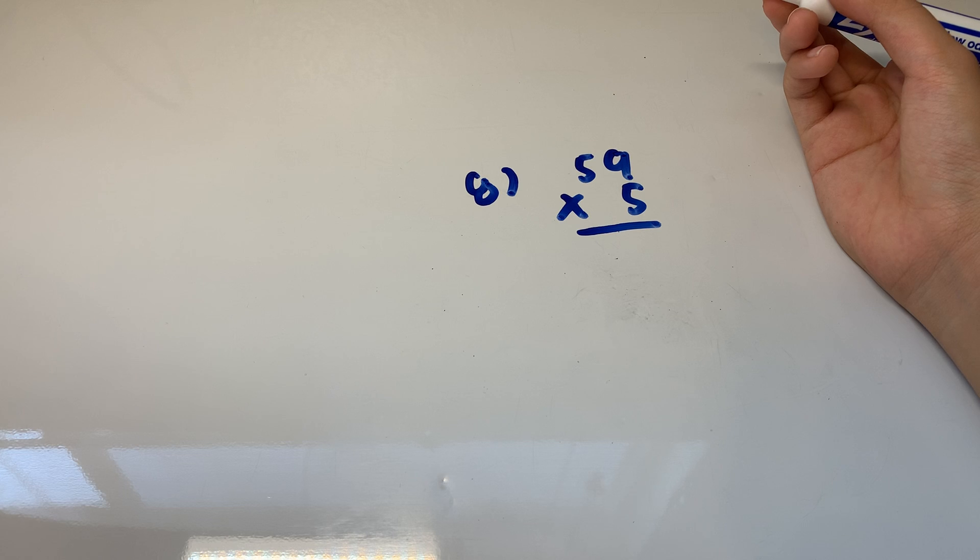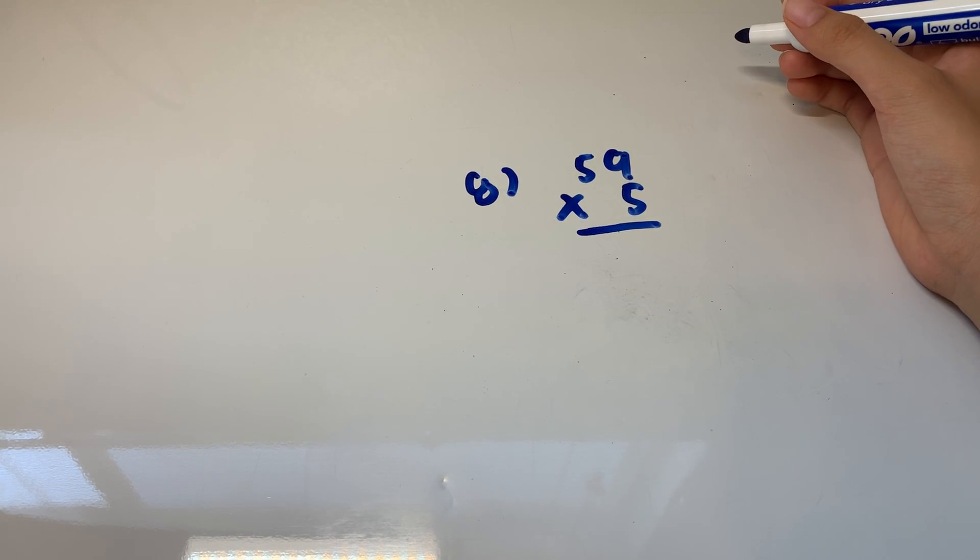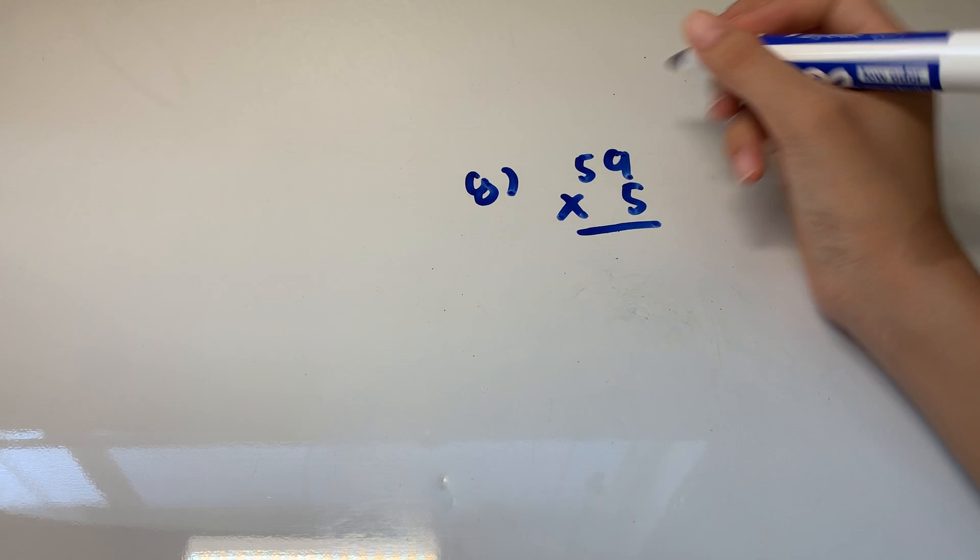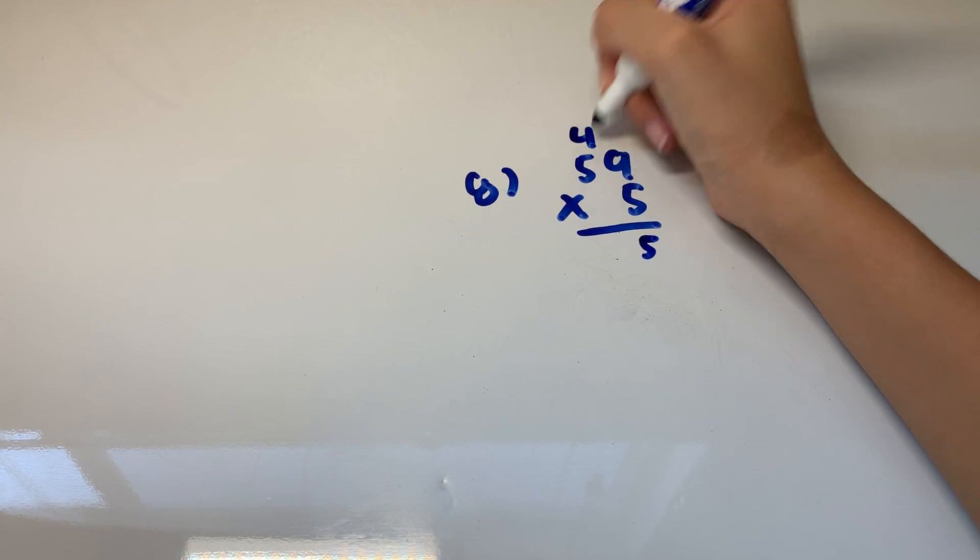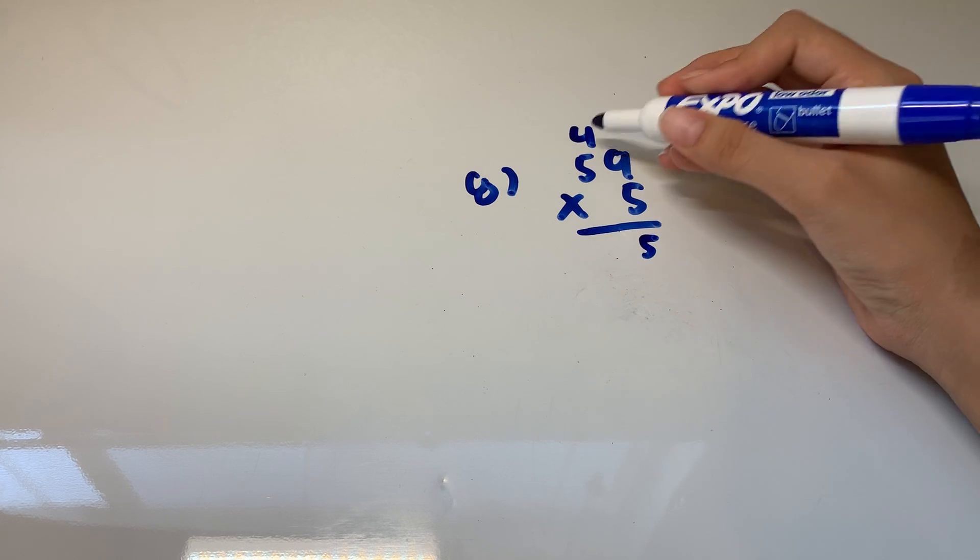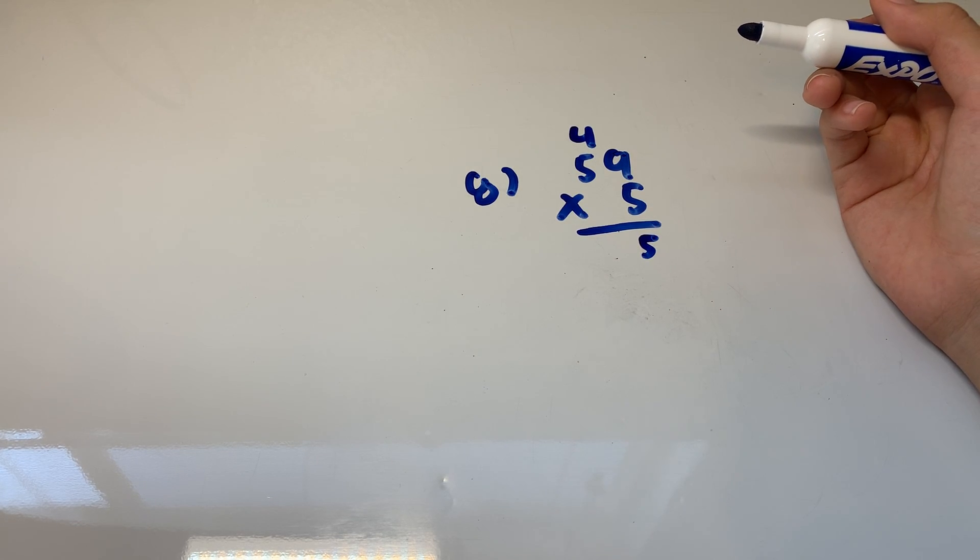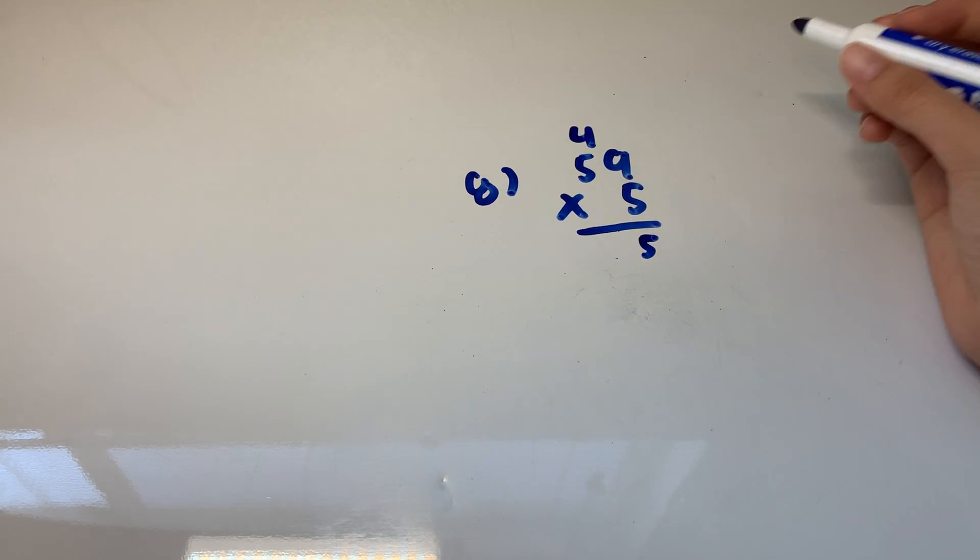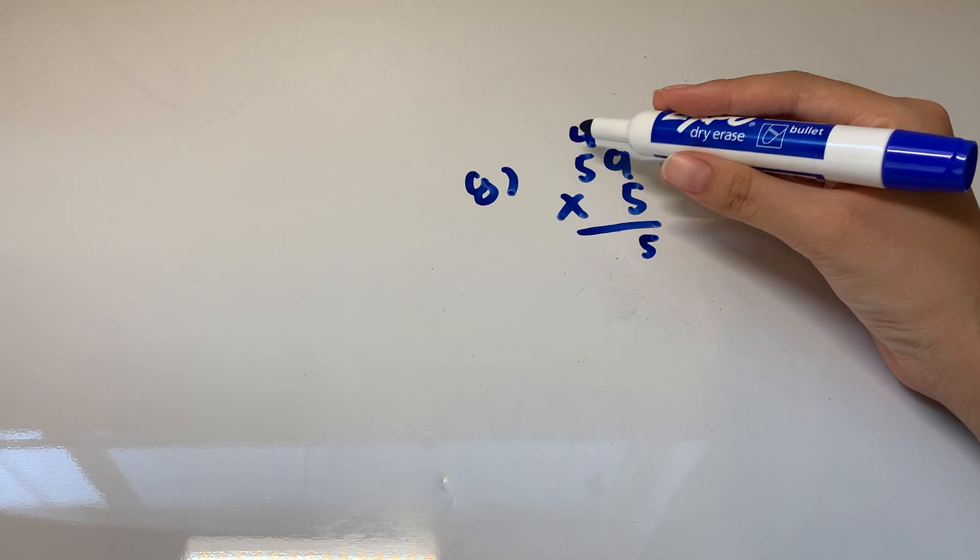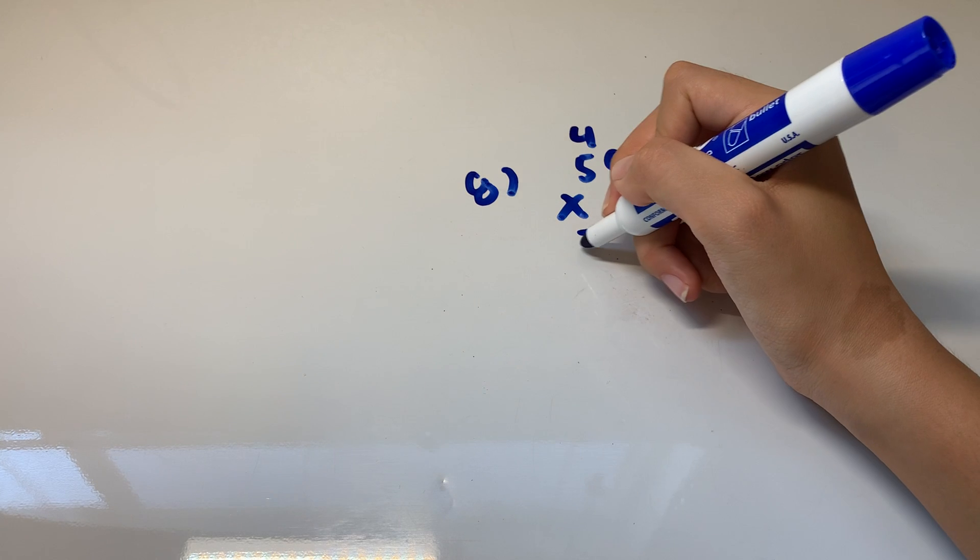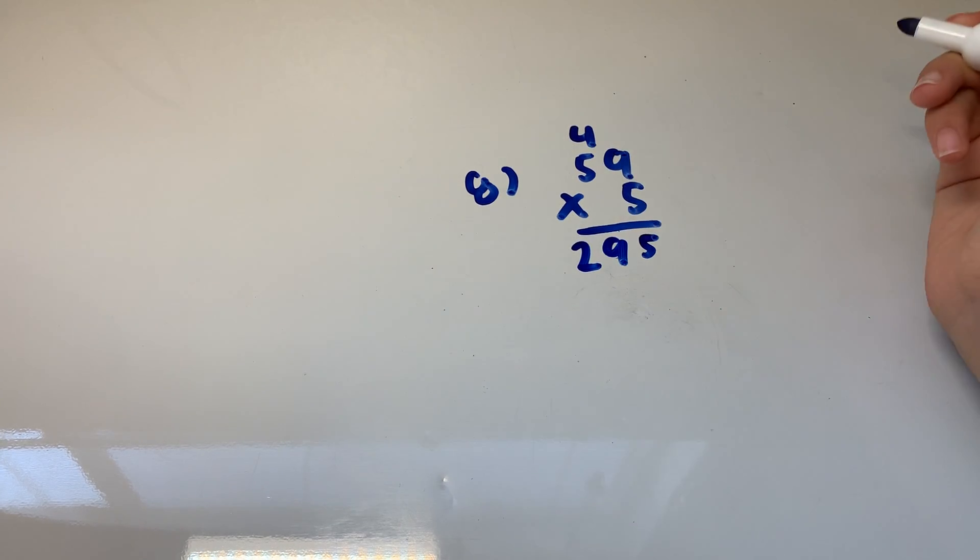So nine times five, if you can remember from the multiplication properties, nine times five is 45. That you have to memorize. So bring down the five and carry over the four. And five times five is 25. You have to remember that also. Just make sure you remember the basic multiplication. And five times five is 25. So 25 plus four is 29. So we just put 29 on the bottom.